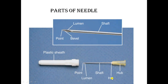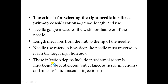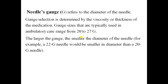The criteria for selecting the right needle involves three primary considerations: gauge, length, and use. Needle gauge measures the width or diameter of the needle. Length is measured from the hub to the tip. Needle use refers to how deep the needle must travel to reach the target injection area — intradermal, subcutaneous, or intramuscular.